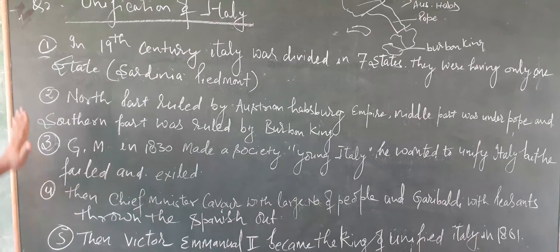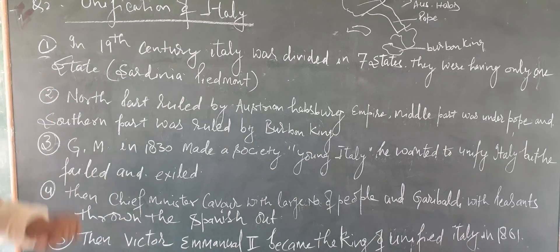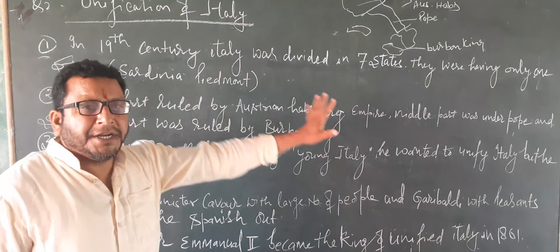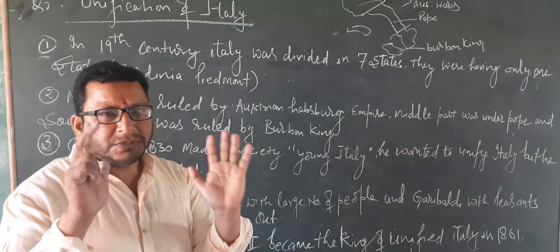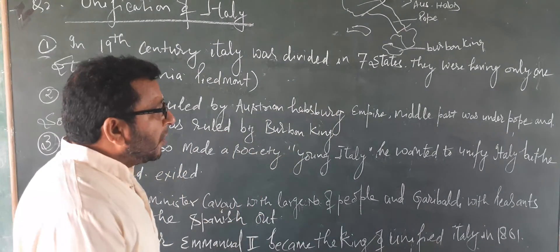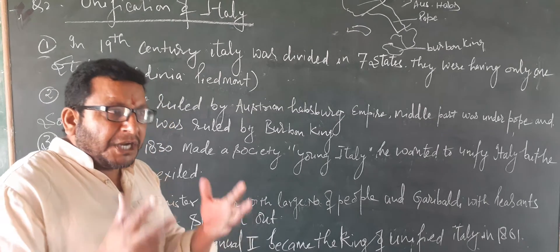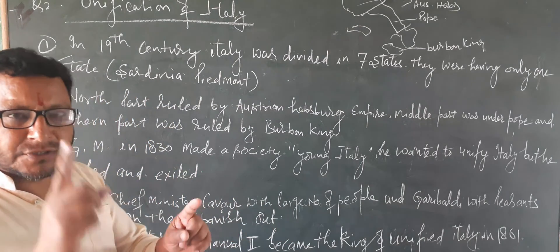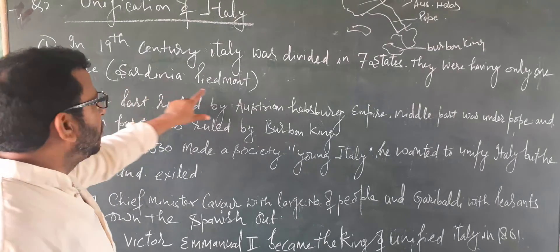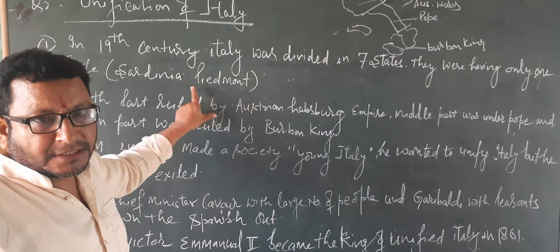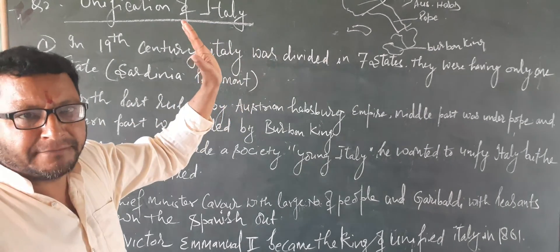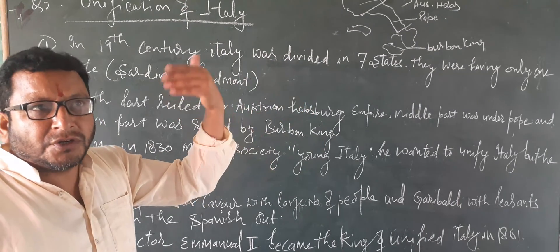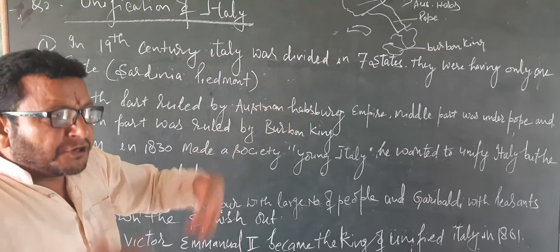Again a story. In the 19th century, number one point: Italy was divided into seven states. They were having only one state of their own, which was called Sardinia-Piedmont. Only one state they were having, and six states were ruled by foreigners.